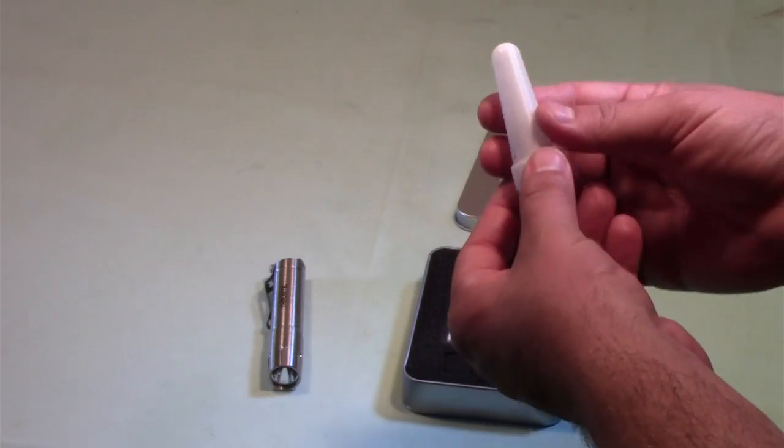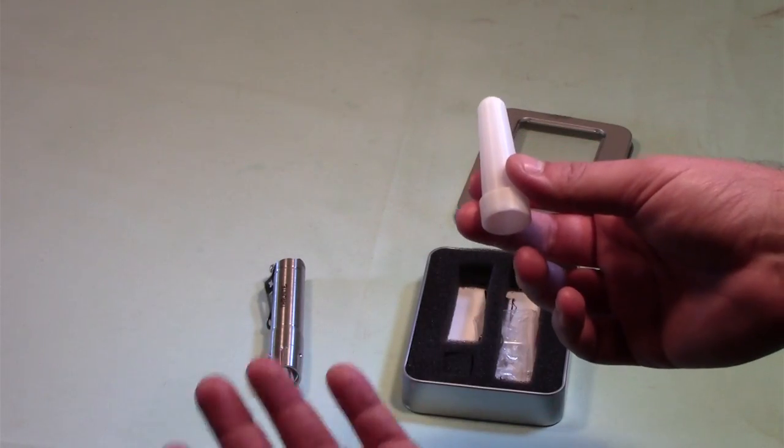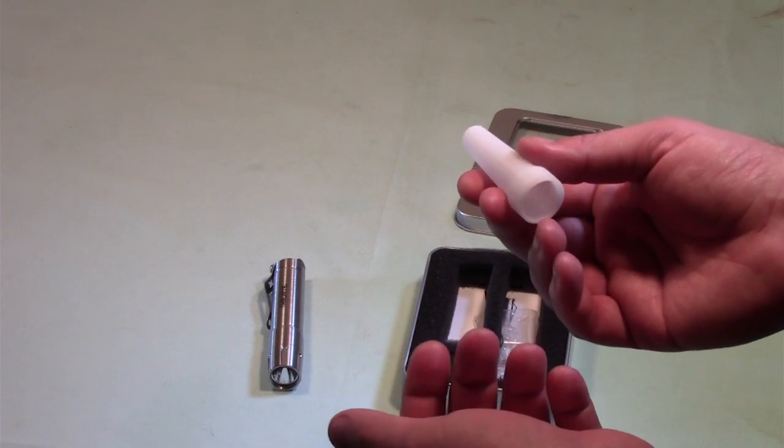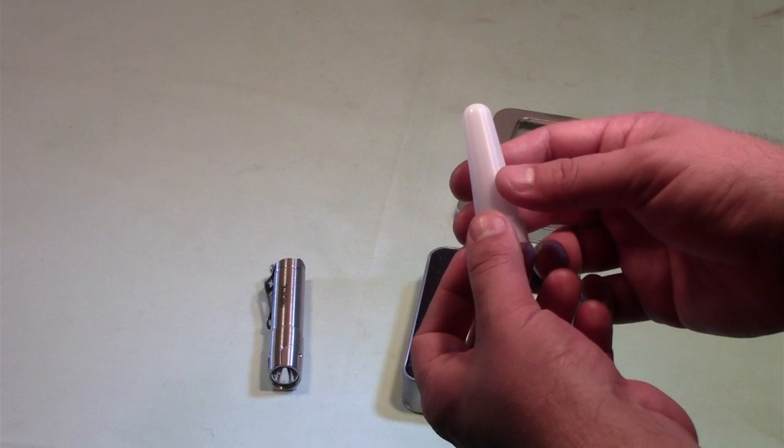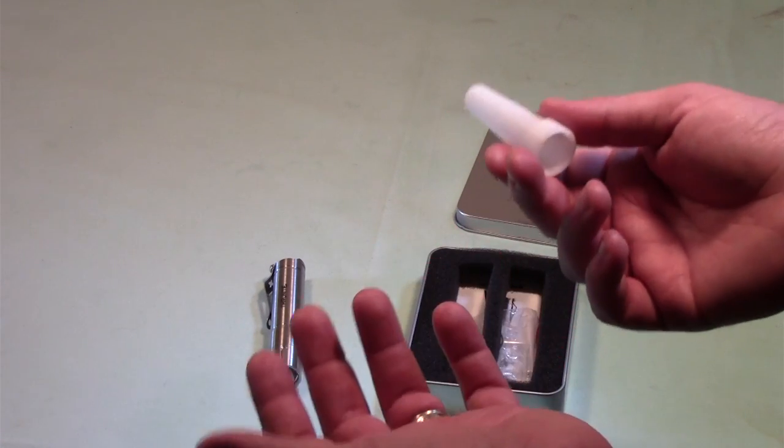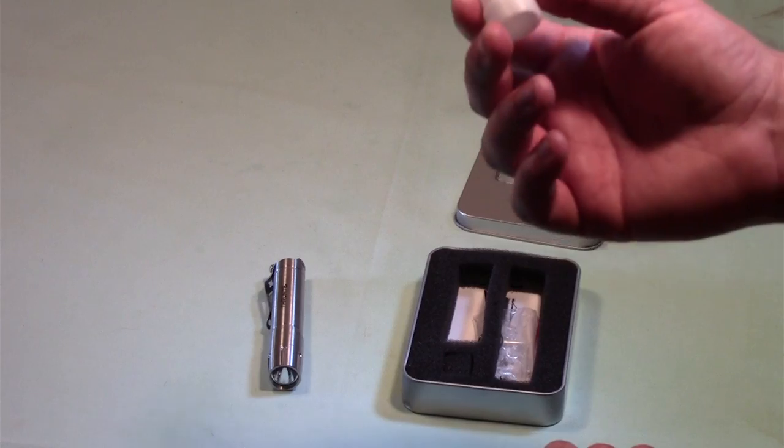It comes with the diffuser, which is really nice. How many everyday carry lights have you found online or found anywhere that come with the diffuser? So this is really nice, really handy that it has that. Usually you're looking at bigger lights that come with diffusers, and usually you're buying them separately. So it's nice that this one actually comes with it.